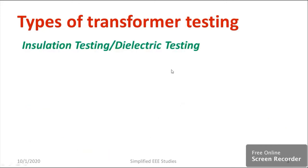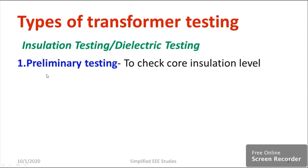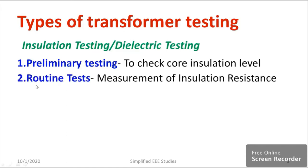Let us have a brief checklist regarding insulation testing. First one is preliminary testing — its main purpose is to check the core insulation level, whether it is adequate or not. Regarding routine test, the main purpose is to check the insulation resistance of the transformer winding.